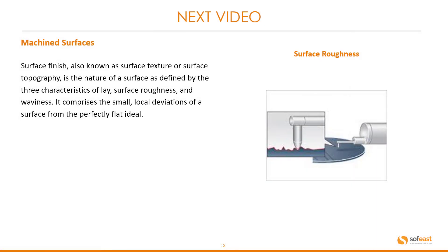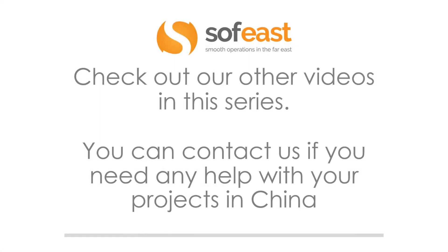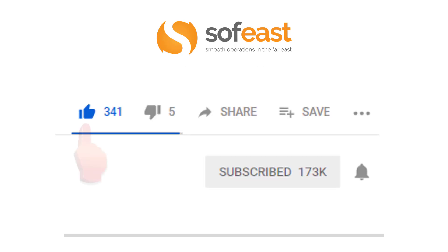In the next video we're going to be looking at machined surfaces. Surface finish, also known as surface texture or surface topography, is the nature of a surface as defined by the three characteristics of lay, surface roughness and waviness, and comprises the small local deviations of a surface from the perfectly flat ideal. Don't forget to check out our other videos in this series and contact us if you need any help with your projects in China. Like, share and subscribe to our channel, and for more information visit our solutions page at softeast.com. Thanks for listening. My name is Paul Adams from SoftEast and I shall see you in the next video.